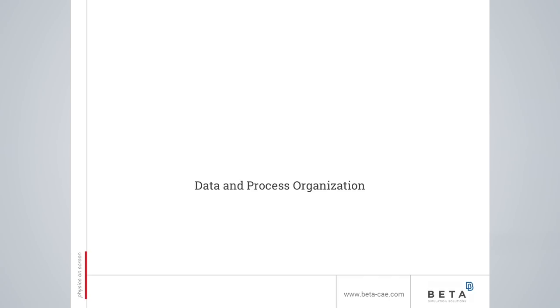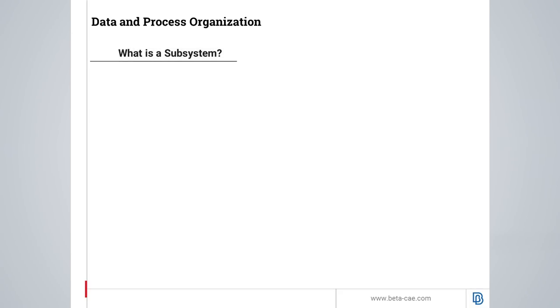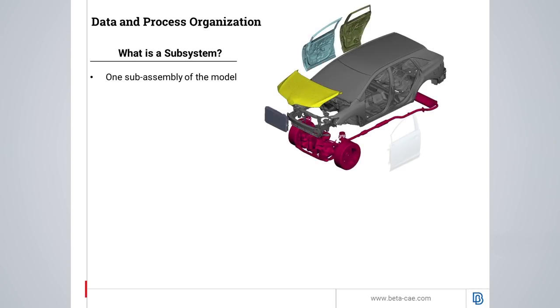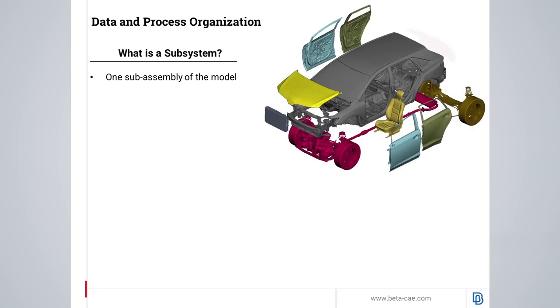Let's dive a little bit deeper in terms of data and process organization. What is a subsystem? A subsystem is a single sub-assembly of the model. This, for example, can be a door, a front or rear axis, a seat, and so on.